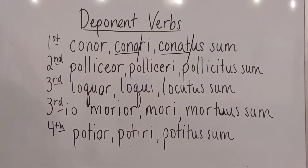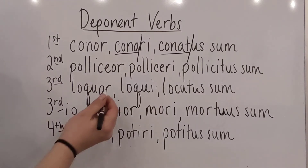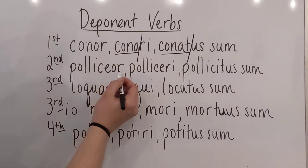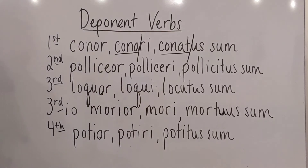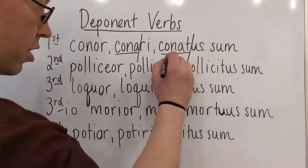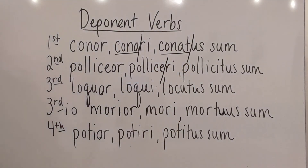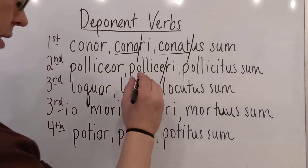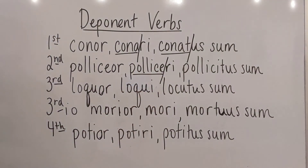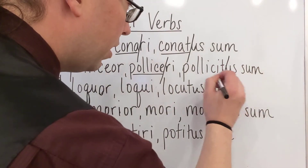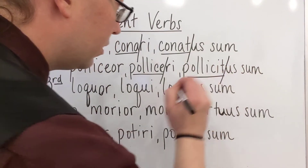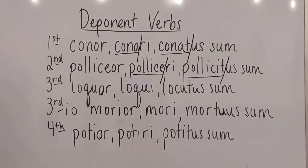For a second conjugation, notice that we still have the -eo, but then the -r because we're in passive land. You chop the -ri off the second principal part to get the present stem: pollice-. And then the supine stem is pollicit-, which forms the perfect, pluperfect, and future perfect passive forms.